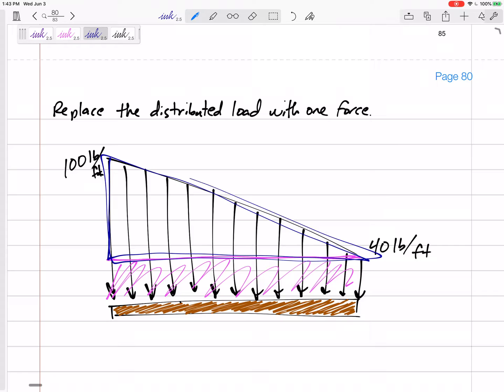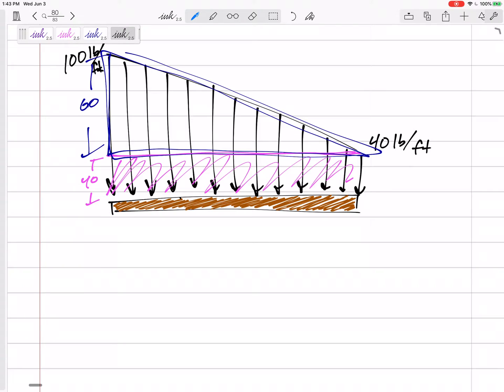The triangular distributed load is 60 tall, right? This is 40 with a 60 pounds per foot triangular distributed load on top of it. I think that's a good way to do those.